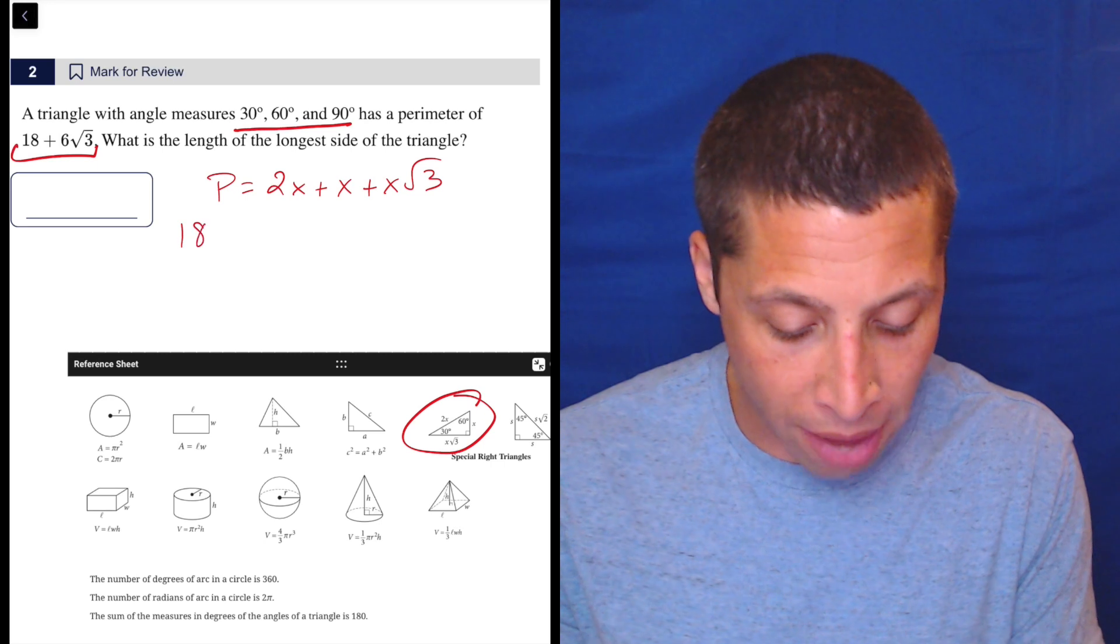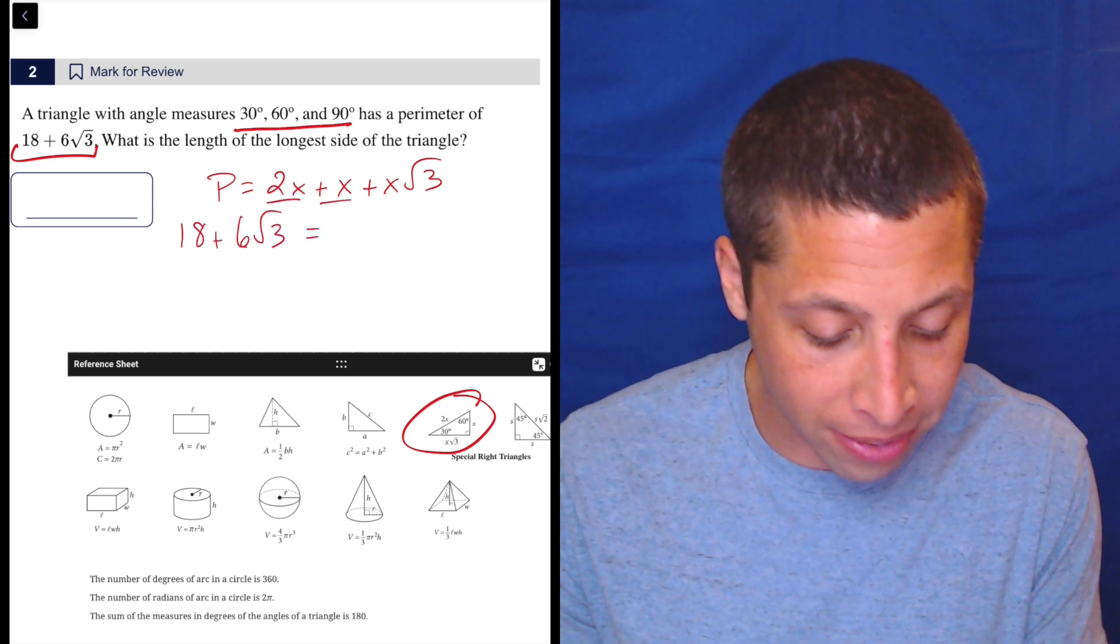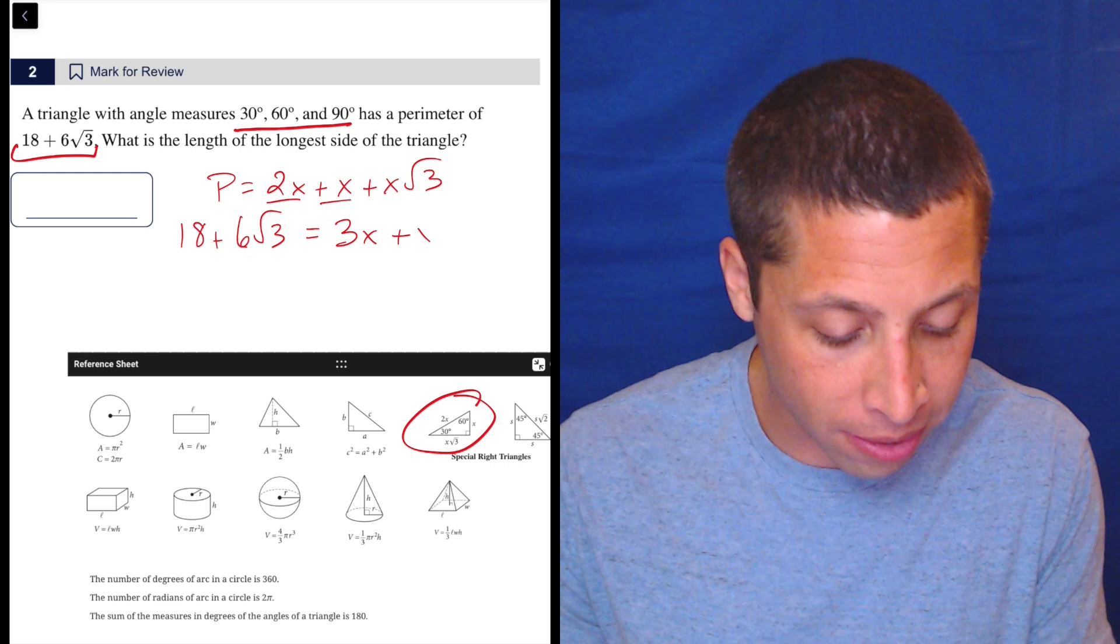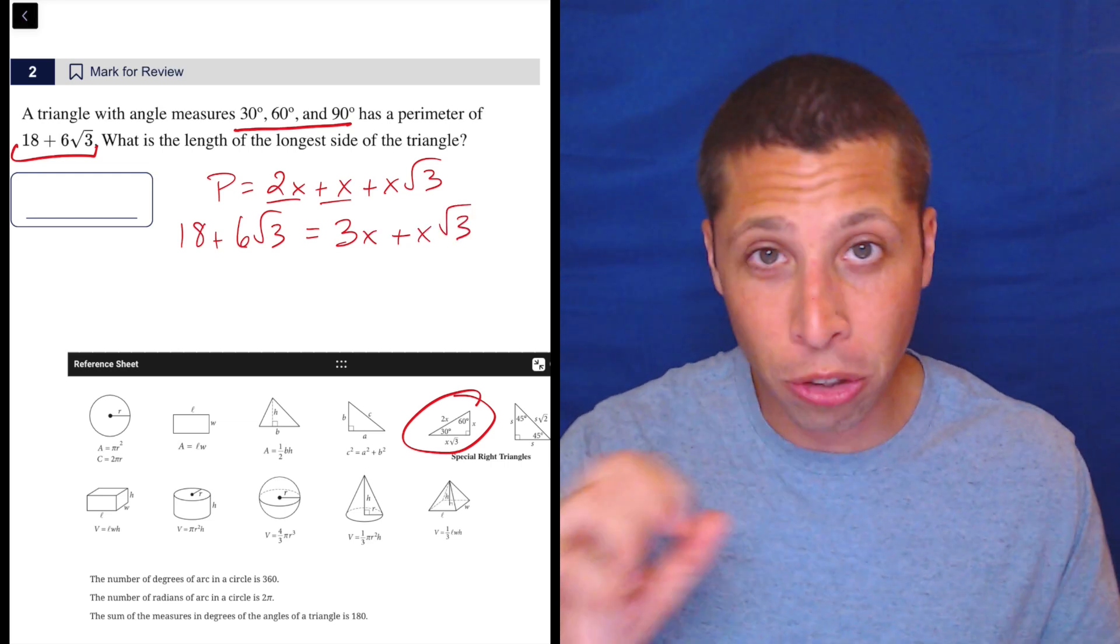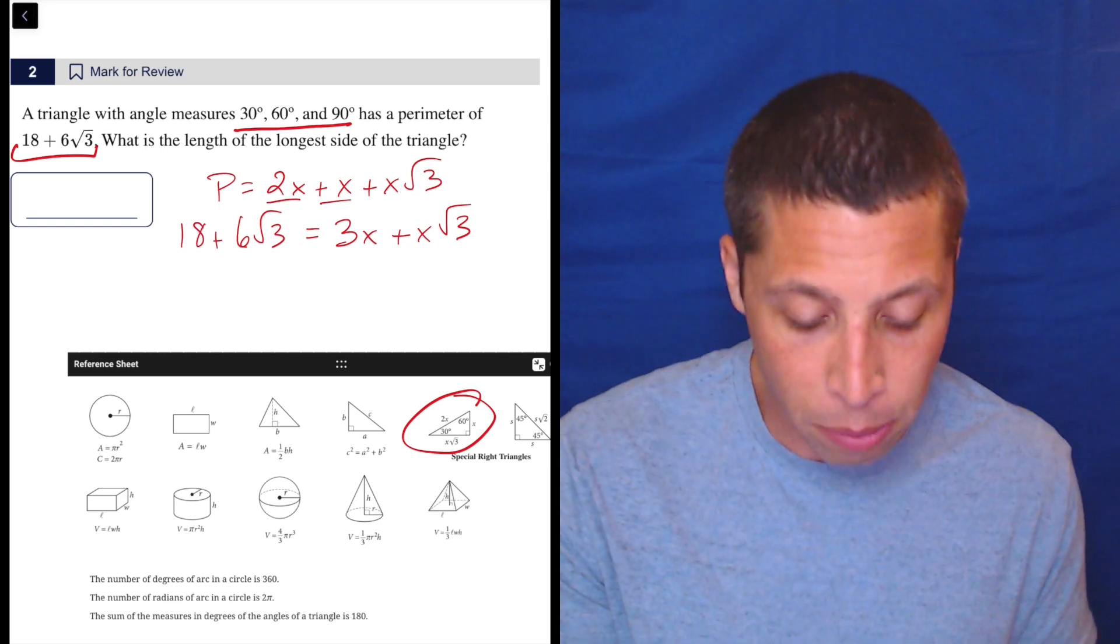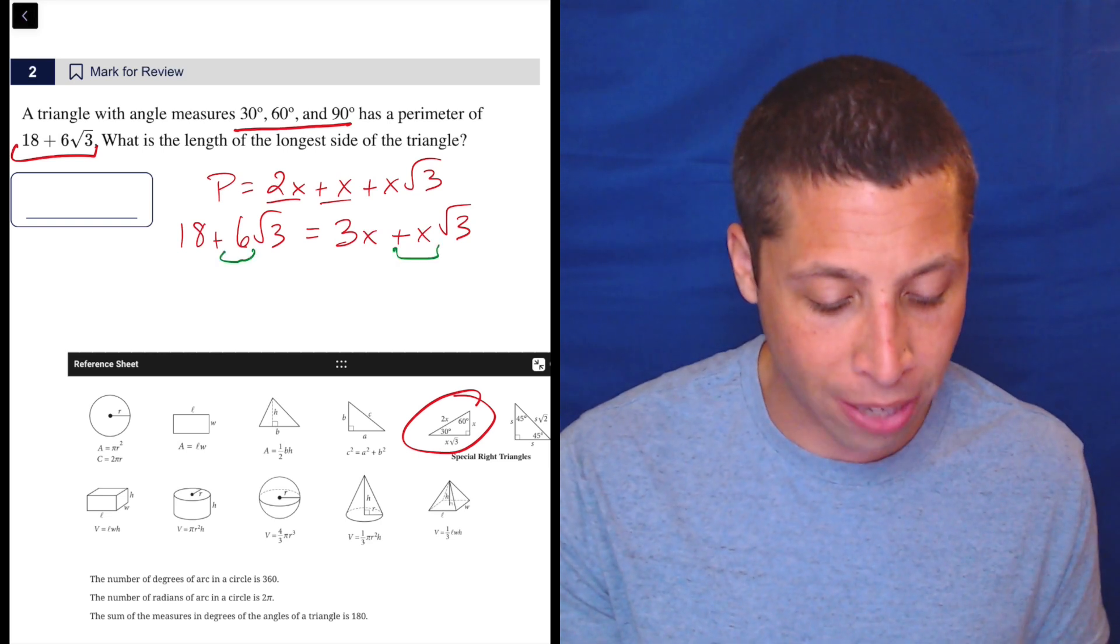So let's combine some like terms here. We have 18 plus 6 root 3. That is equal to 2x plus x is 3x plus x root 3. So without solving for x in the more traditional way where we kind of move things across and do all that, we can see what the answer is going to be. 6 is my x because that's what's attached to the root 3.